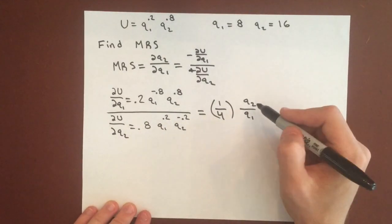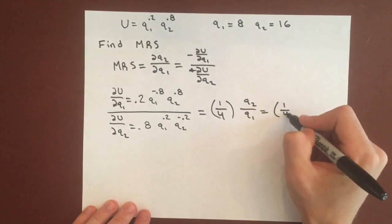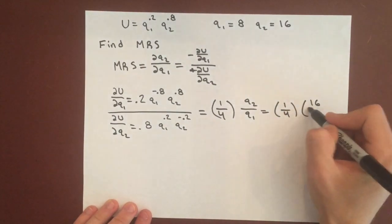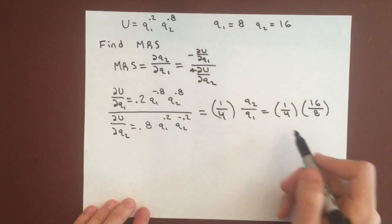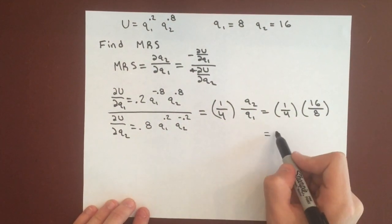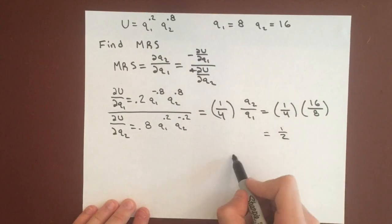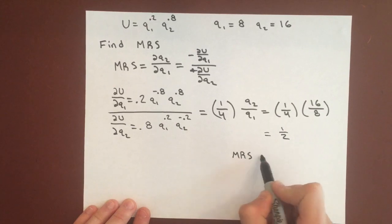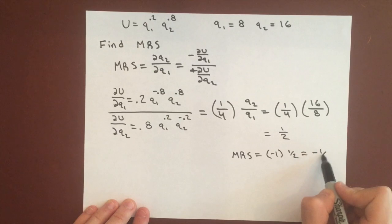And we know the value for Q2 and Q1, so we can get 1 fourth times 16 over 8. So that gives us 1 half, but we didn't add in the negative yet, so our MRS will be this 1 half times negative 1, and so it's just negative 1 half.